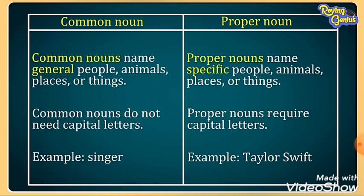Now what we have learned: common noun means the general name of people, animal, places or things. And proper noun means the specific name of people, animal, places or things. Common nouns do not need a capital letter, but proper noun requires a capital letter — proper nouns are always in capital form. For example, in common noun: singer. In proper noun: Taylor Swift.